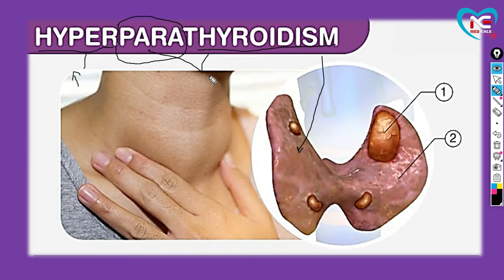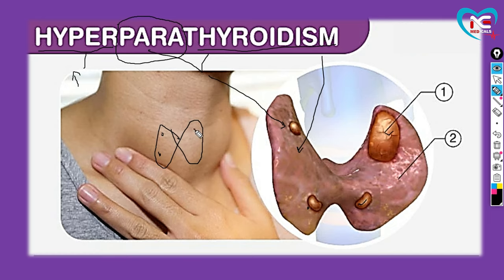Parathyroid ek aur gland hoti hai. Yeh choti choti glands aap dekh rahe ho - inko hum parathyroid gland kehte hain. Jo ki aapki thyroid gland ke andar hi hoti hai. Yeh puri aapki thyroid gland hai - butterfly shaped structure jo ki aapki neck pe hoti hai. Aur iske andar choti choti four glands hoti hain jinhe hum parathyroid gland bolte hain.